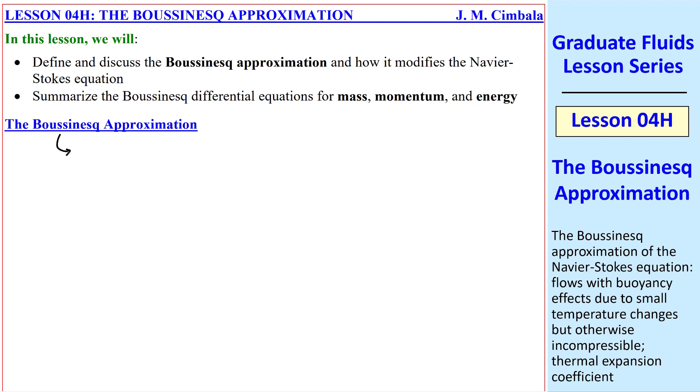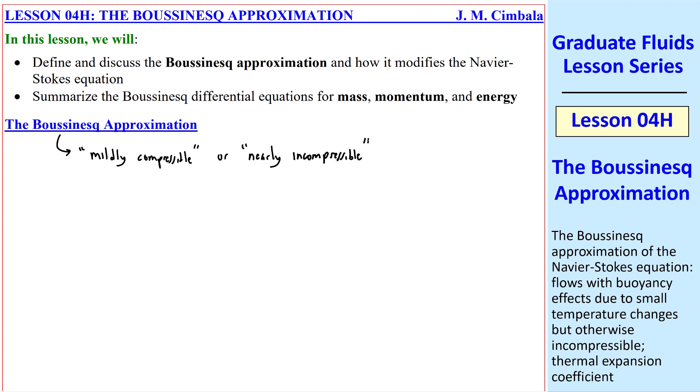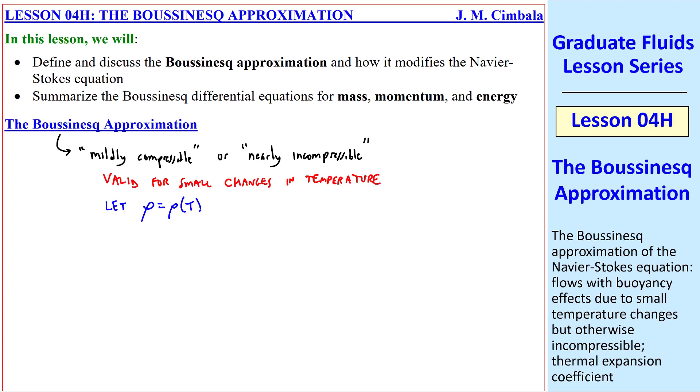You can think of the Boussinesq Approximation as mildly compressible or nearly incompressible. It's valid for small changes in temperature. In particular, we let rho, the density, be a function of temperature in the gravity term, but constant everywhere else. This will be the key to the Boussinesq Approximation.